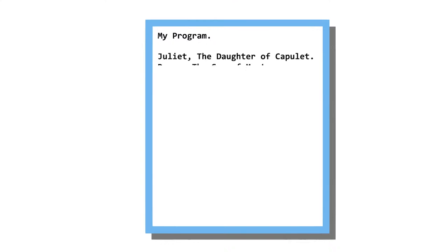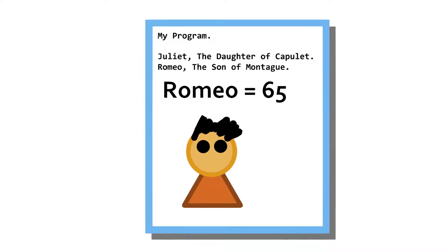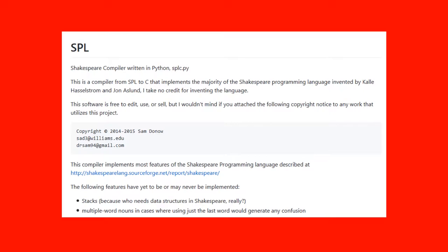Programs in the Shakespeare programming language are structured like Shakespeare plays. They start with a title, which does nothing! What follows the title is a list of characters and descriptions about them. Each character acts as a variable that can hold an integer. Some versions of this programming language, like the original one, also allow characters to be used as a stack.